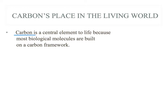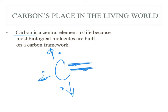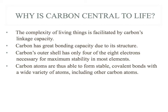Carbon is kind of like the Beyoncé of all molecules. Because carbon has — and hopefully we remember this from chemistry — those four valence electrons. So it can easily bond with other elements. It can also form covalent or double bonds. It has a great bonding capacity because of that valence electron structure, because there are four of those eight electrons in that outer shell.